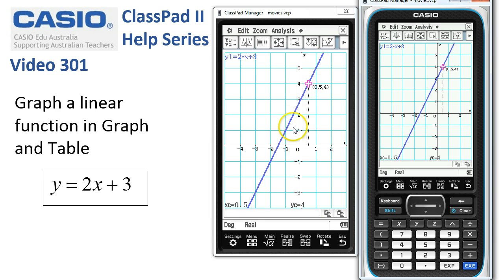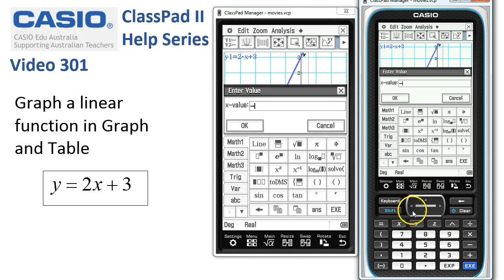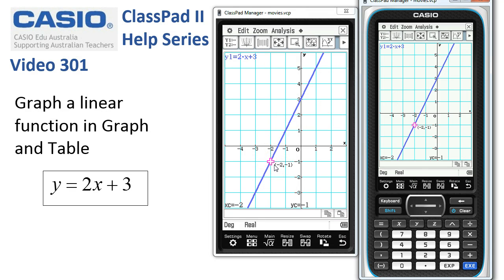And we can do this as often as we like. Maybe we want to go to negative 2. So I'll tap negative 2 and say OK. And the cursor jumps to negative 2. So that's tracing and jumping along the line very quickly.